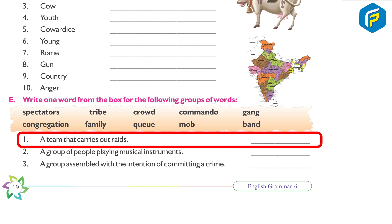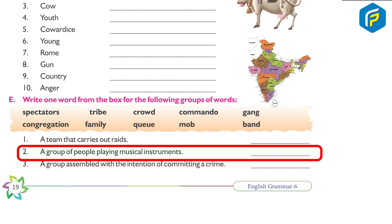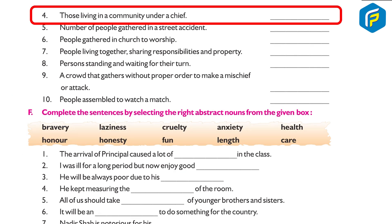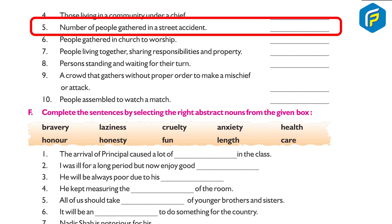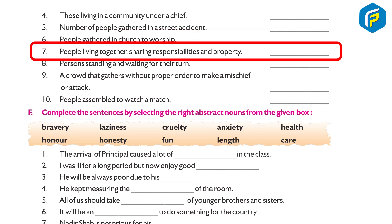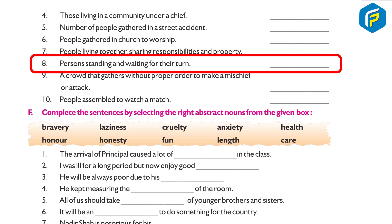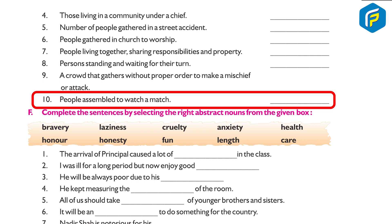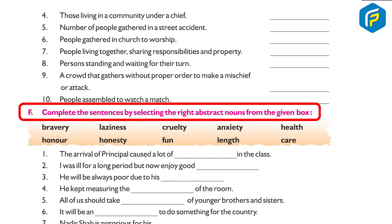(E) Write one word from the box for the following groups of words: 1. a team that carries out raids — mob; 2. a group of people playing musical instruments — band; 3. a group assembled with the intention of committing a crime — gang; 4. those living in a community under a chief — tribe; 5. number of people gathered at a street accident — crowd; 6. people gathered in a church to worship — congregation; 7. people living together sharing responsibilities and property — family; 8. persons standing and waiting for their turn — queue; 9. a crowd that gathers without proper order to make mischief or attack — mob; 10. people assembled to watch a match — spectators.